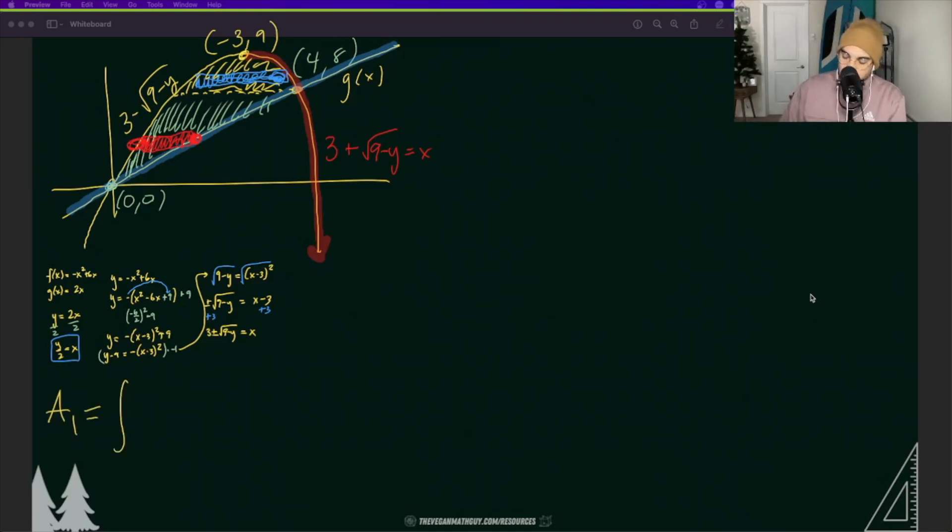Area one is from zero to eight. Now this is in terms of y. So again look at how I got zero and eight. Zero is the bottom value in the y direction and then eight is going to be that value where the first area ends. Now I have the function on the right which is y/2 minus the function on the left which is 3 - √(9-y) dy. Let's simplify this a little bit. Zero to eight y/2 - 3 + √(9-y) dy. This is going to be pretty simple.